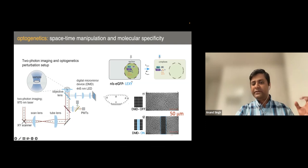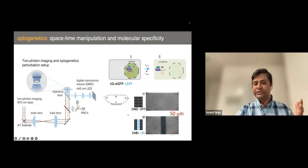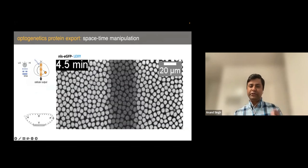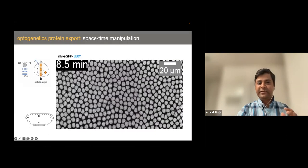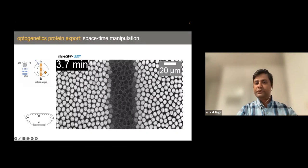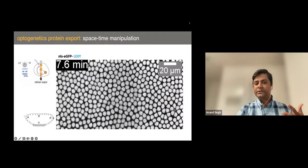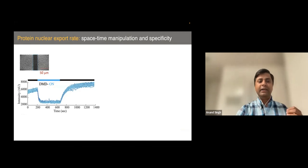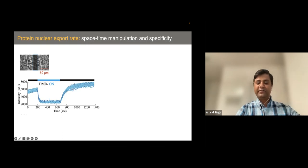These are individual nuclei tagged with particular proteins here using the Lexi system. As we turn on our blue light, you can see we can export protein out of the cell nucleus in a very spatially confined manner by just using these simple tools. This movie shows you in real time how we could specifically perturb the system by using light without affecting much of the other signaling pathways. We can further quantify how the nuclear concentration drops upon light stimulation - it drops quickly within a minute. By keeping the blue light on, you can achieve a low level of concentration of your protein of interest. As you turn off the blue light, it quickly goes back into the nucleus.